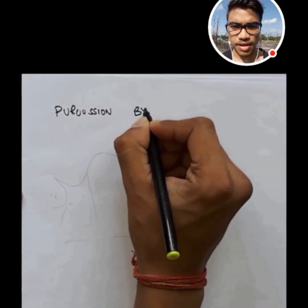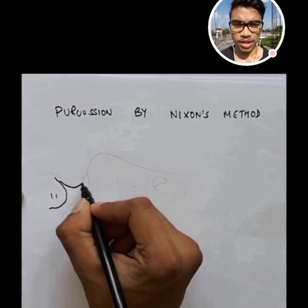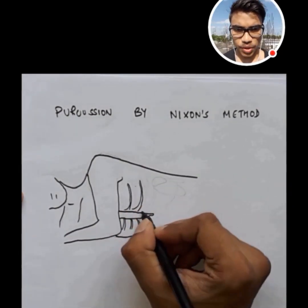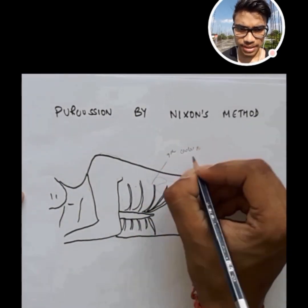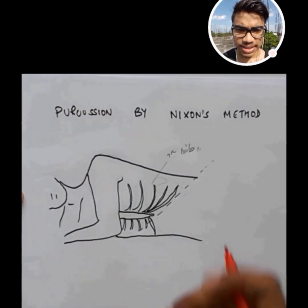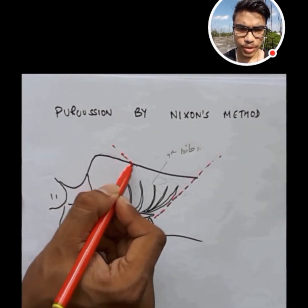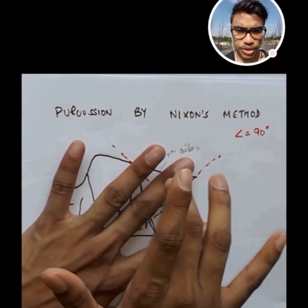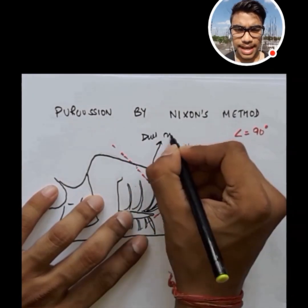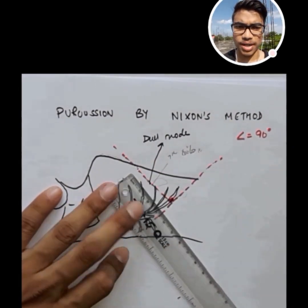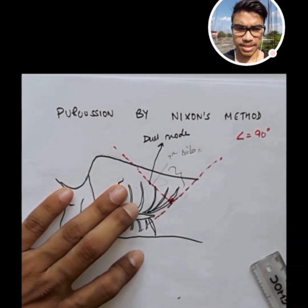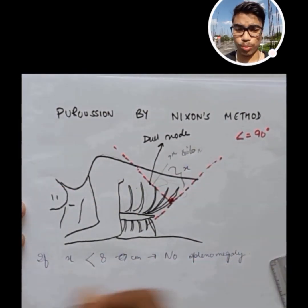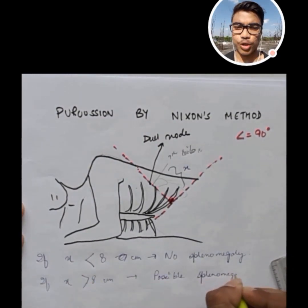Finally, we have the percussion by Nixon's method. Here, we put the patient in the right lateral position. We can see the spleen is at the ninth costal rib. We take an imaginary line passing the midway and perpendicular to the costal margin — the angle should be 90 degrees. We percuss from below upwards, get a dull note, and mark the area. We measure the distance; let the distance be x. If x is less than 8 cm, it is normal with no splenomegaly. If more, then there is possible splenomegaly.